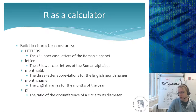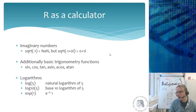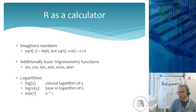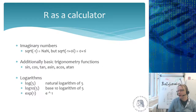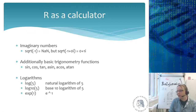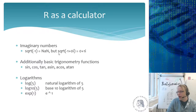R also supports imaginary numbers. For example, computing the spring damping curve of a weight dropping into water requires imaginary numbers. By default, sqrt(-1) returns NaN, but if you write sqrt(-1+0i), R recognizes the imaginary part and returns i. I used imaginary numbers maybe three times during my entire PhD in bioinformatics, but sometimes they are really useful.